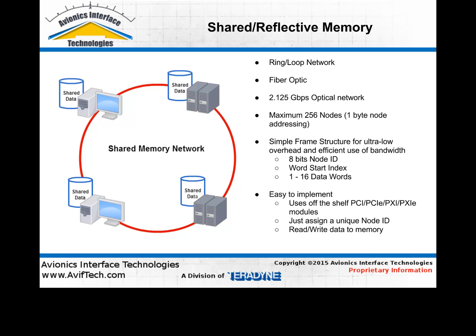It's also very simple — it allows a maximum of 256 nodes, with a one-byte node address or node ID contained in messages cycling on the loop. It's ultra-low overhead, using as much of that 2 gigabit per second bit rate as possible to share data and avoid protocol overhead. It has a very simple frame structure: an 8-bit node ID, a start index into the shared memory bank. The size of the shared memory bank is 256 megabytes. When a frame is exchanged on the network, you need to know which node it came from and the offset into that shared 256 megabytes of memory where the data words in the frame are supposed to be stored.